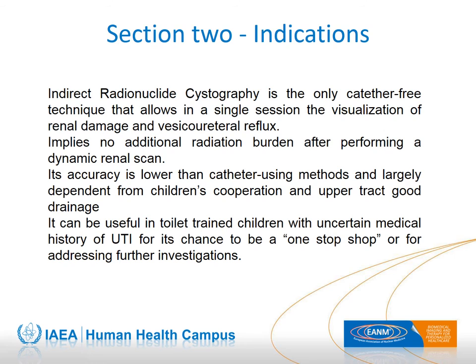On the other hand, the accuracy for either purpose is lower compared to static renal scan and DRC. Toilet-trained children with an unclear history of febrile UTI and no urinary tract dilatation at ultrasound can be initially studied with IRC. The results will help to decide further examinations — for instance, performing a DRC or VCUG in case of renal damage when IRC shows no reflux.